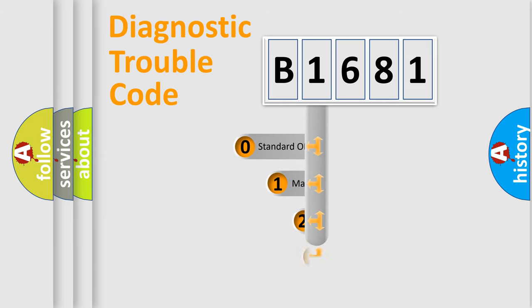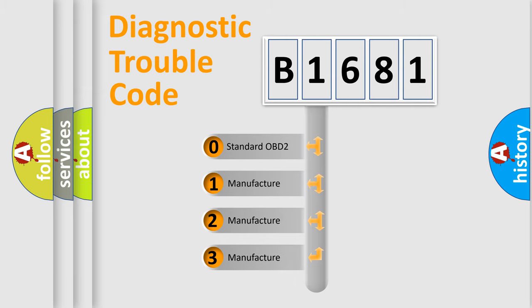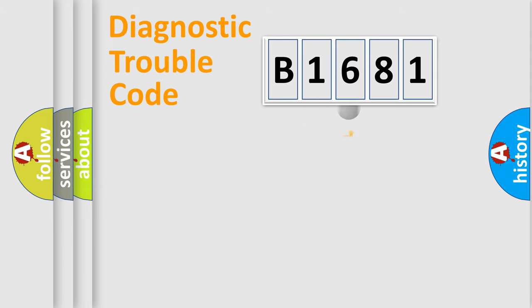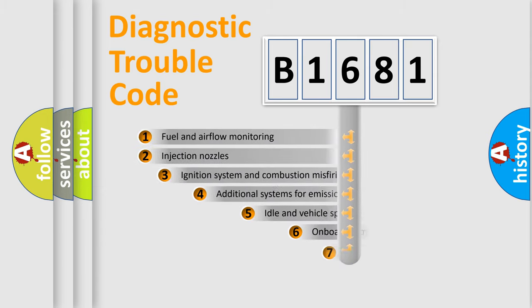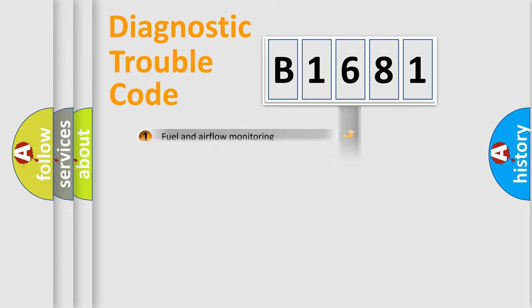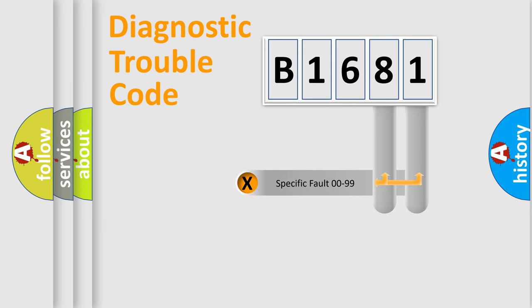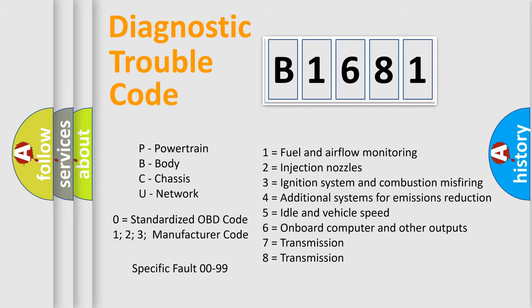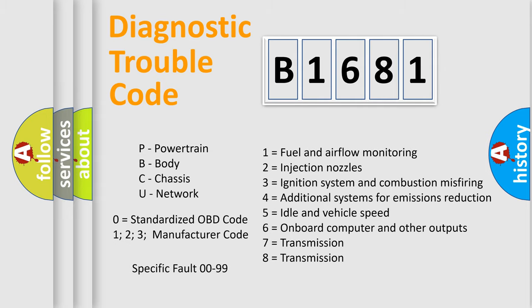This distribution is defined in the first character of the code. If the second character is expressed as zero, it is a standardized error. In the case of numbers 1, 2, or 3, it is a more specific expression of a car-specific error. The third character specifies a subset of errors. This distribution is valid only for the standardized DTC code, where the second character is expressed by the number zero. Only the last two characters define the specific fault of the group.